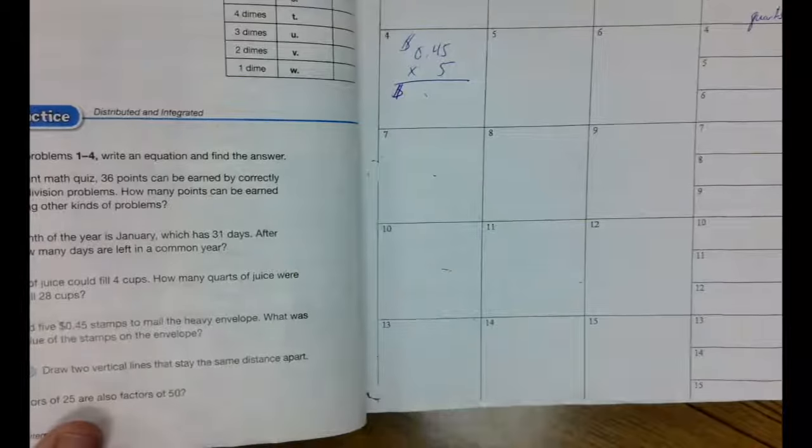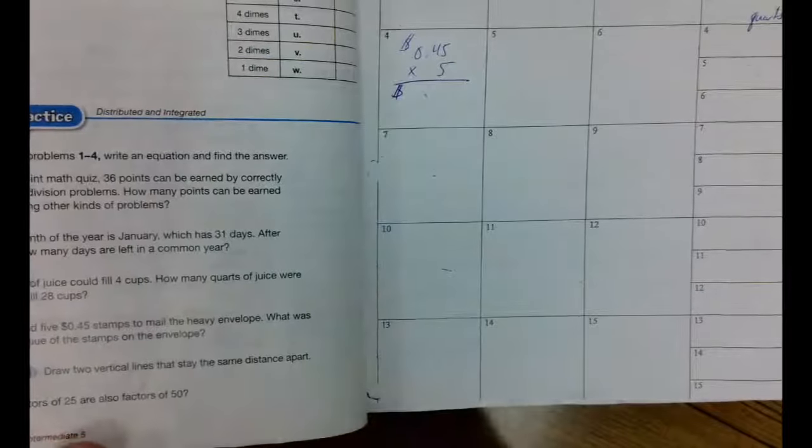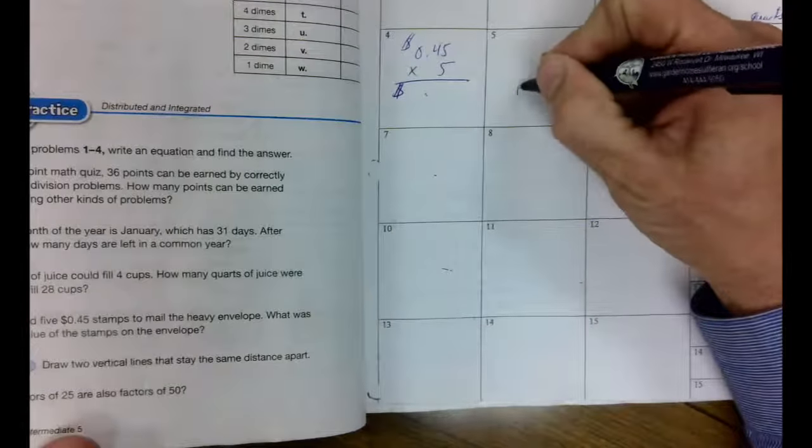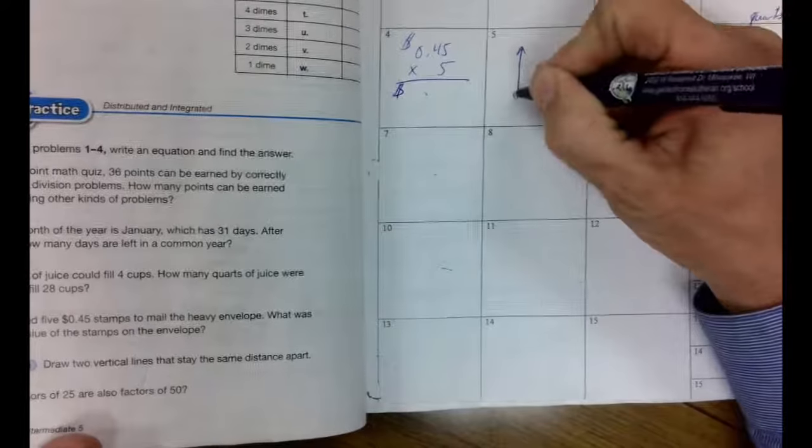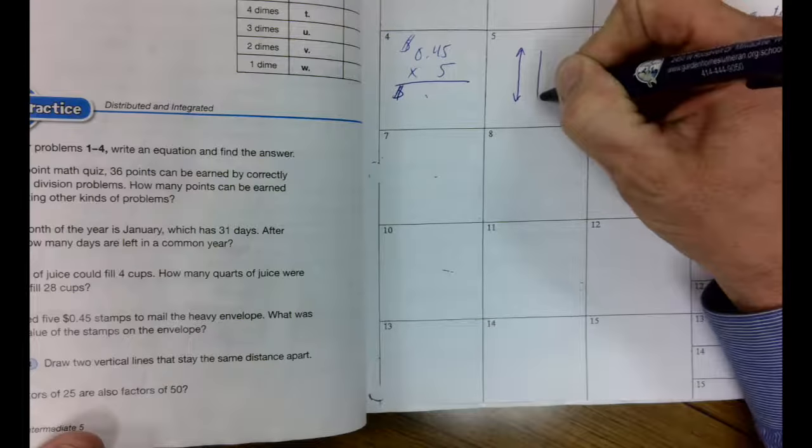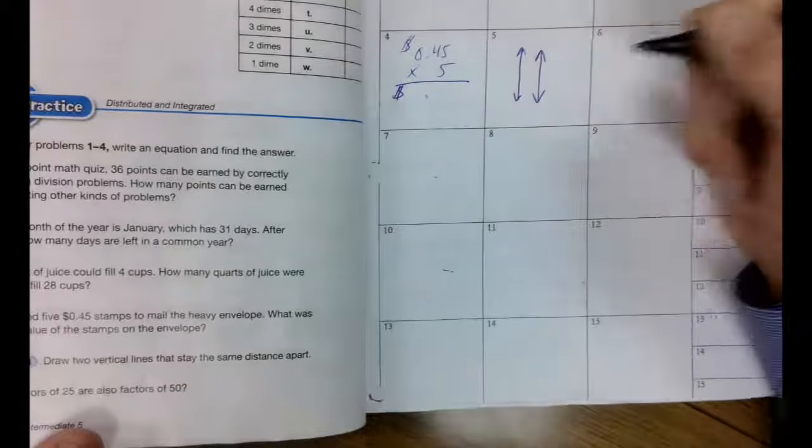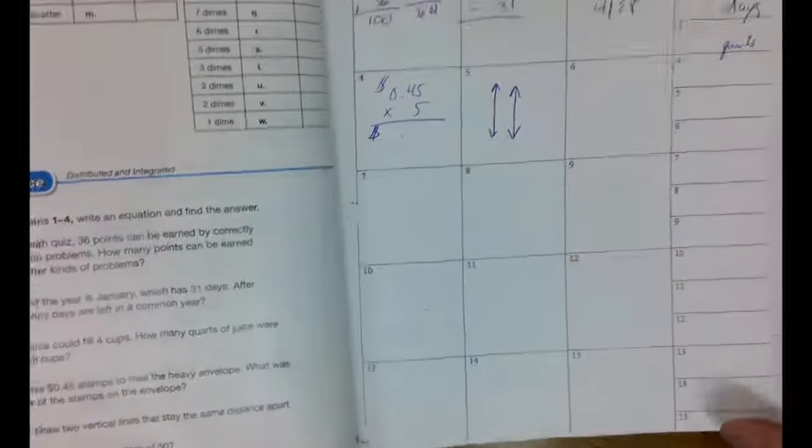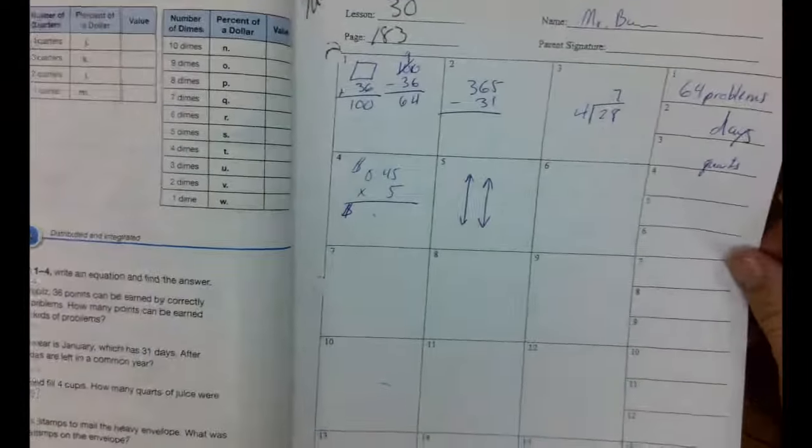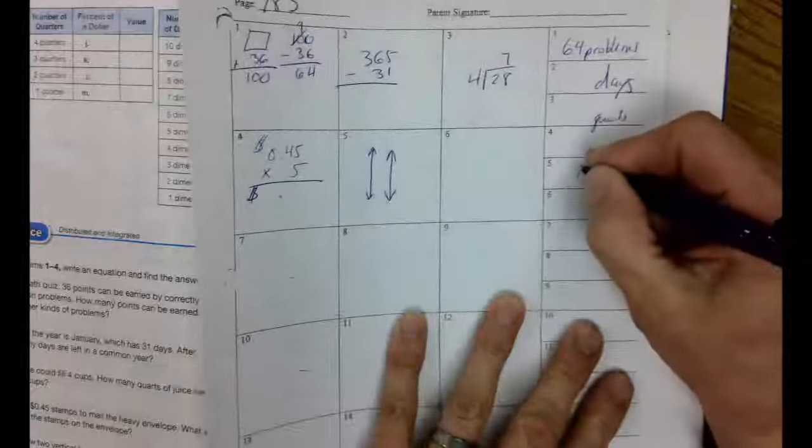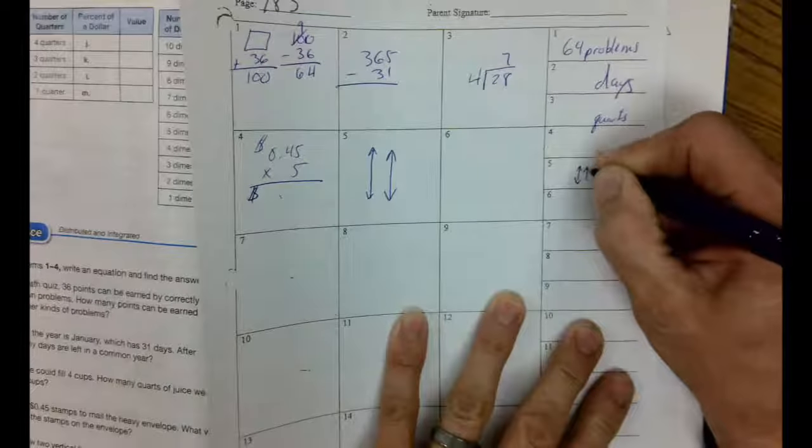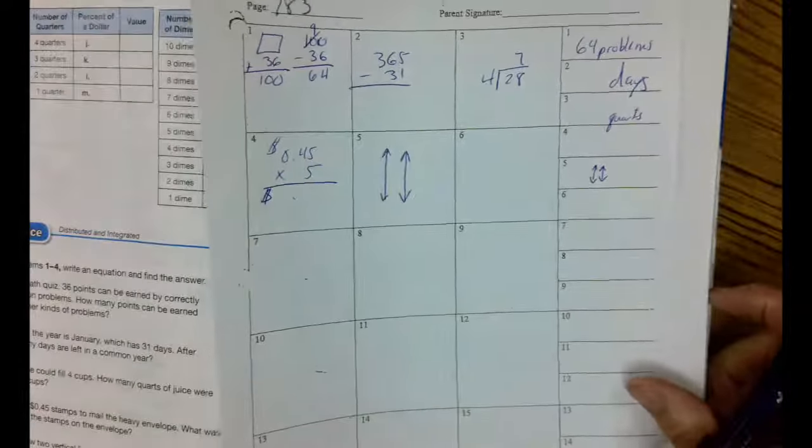Number five, draw two vertical lines that stay the same distance apart. Vertical goes up and down. Lines have arrows. So they would be parallel, even though we haven't learned parallel yet. It's coming up. So make sure you get that in your answer key. Vertical lines have arrows.